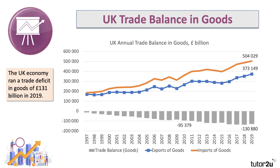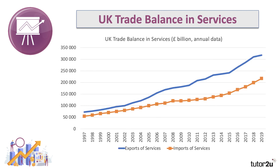You can see that the value of imports of goods is greater than the value of exports, meaning there is a trade deficit. In terms of goods — washing machines, cars, computers, LCD screens, smartphones, oil and gas, food and drink — the UK economy ran a trade deficit in goods of 131 billion pounds in 2019. We exported over 370 billion pounds worth of goods but imported over 500 billion pounds. However, we also trade services: tourism, hospitality, financial services, business services, insurance, and creative services.